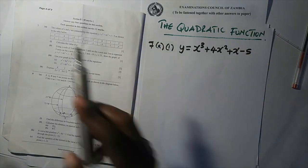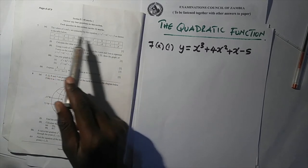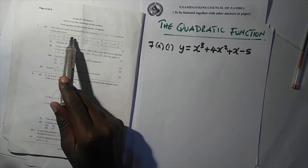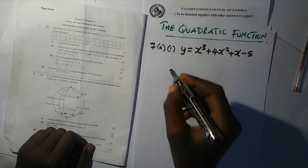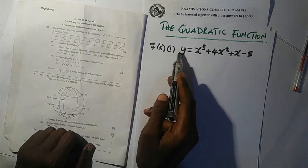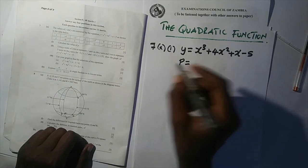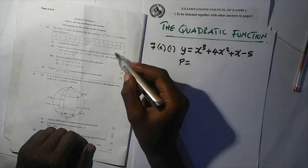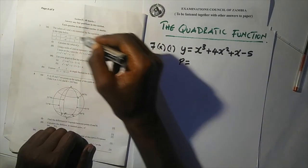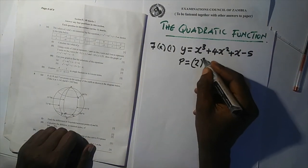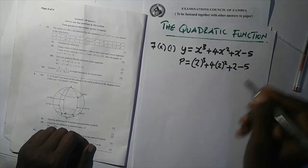The question says calculate the value of p. Notice in the table that 2 is found in the row for x values, and the numbers below are y values. So we substitute: p is in the y row, and 2 is the corresponding x value. Therefore p = 2³ + 4(2²) + 2 − 5.